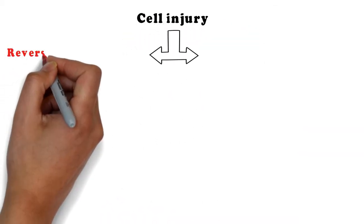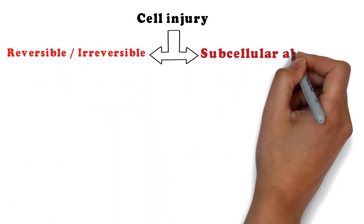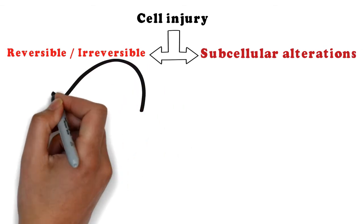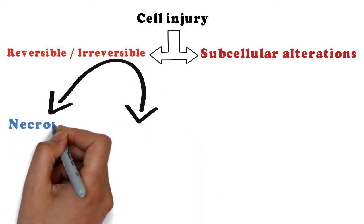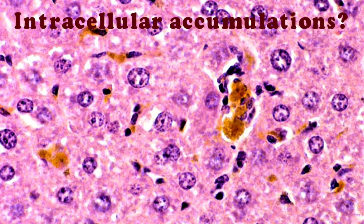Now let's talk about cell injury. Sublethal or chronic injury stimuli can cause reversible or irreversible cell injury and subcellular alterations. Irreversible injury may lead to cell death by necrosis or apoptosis.